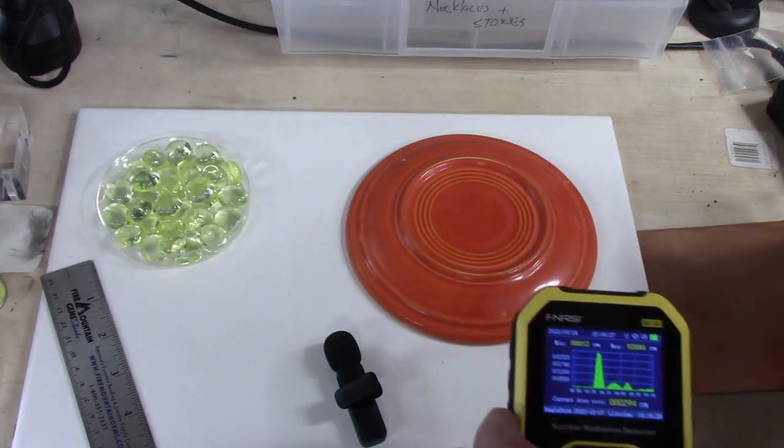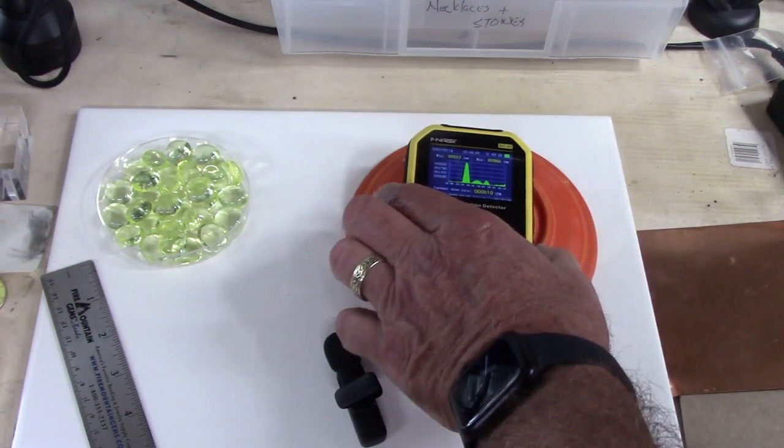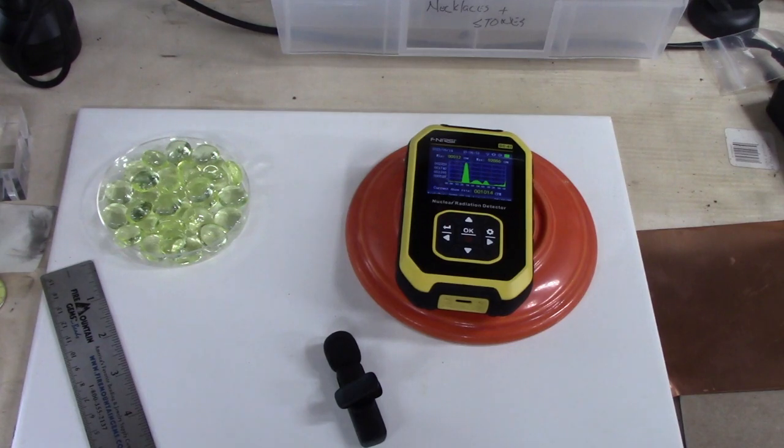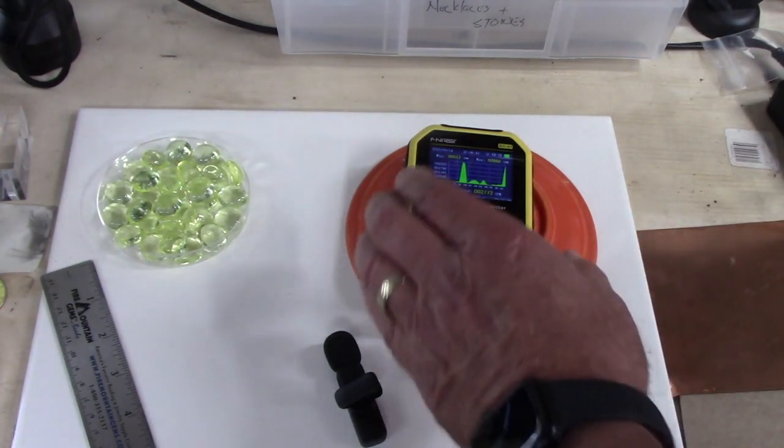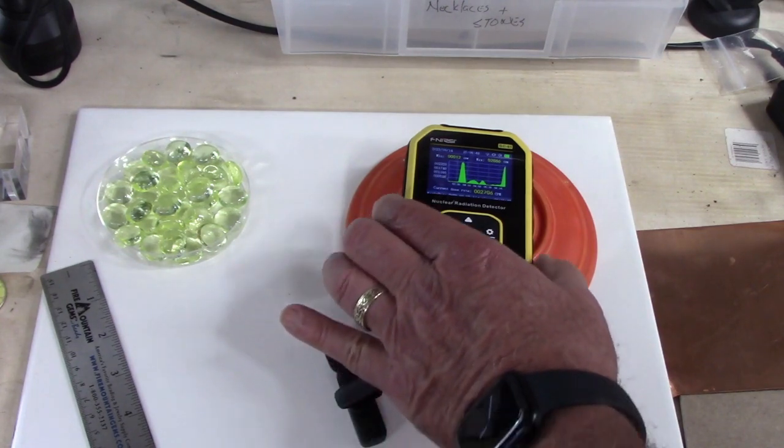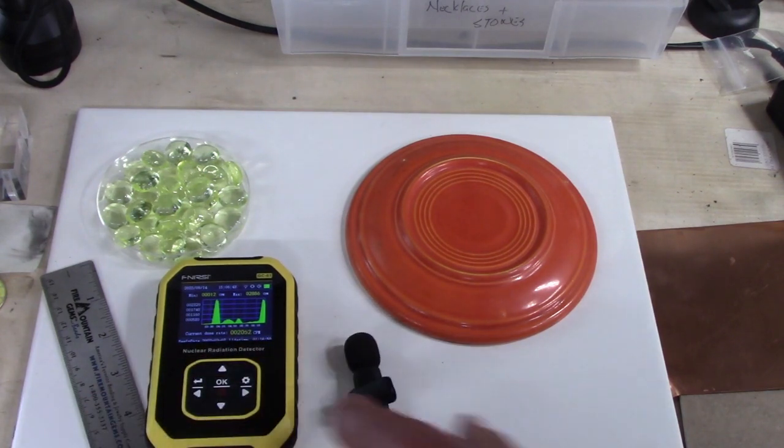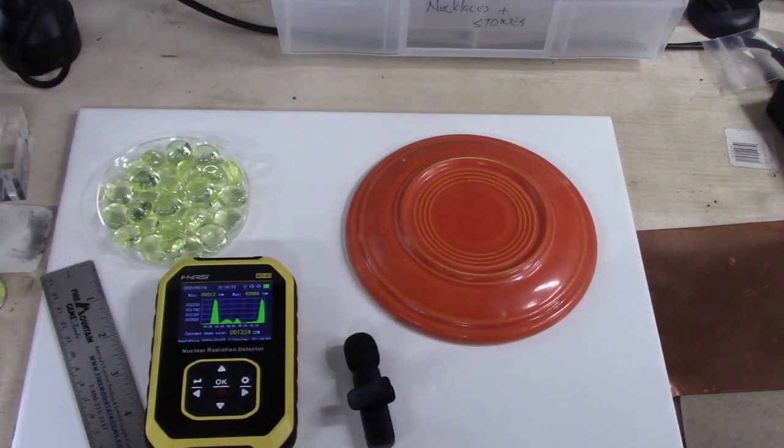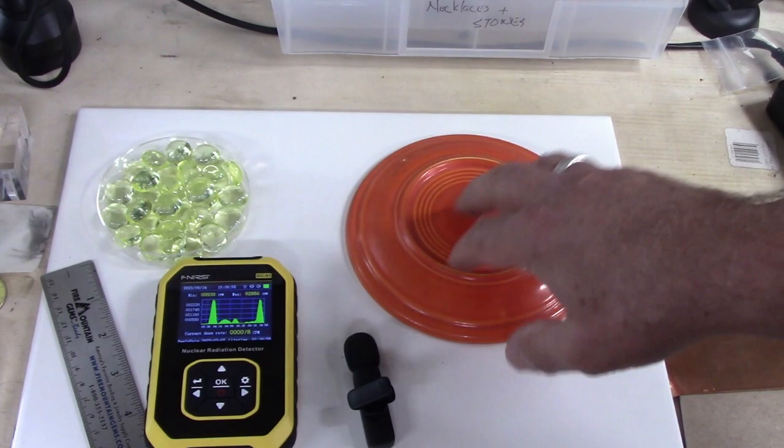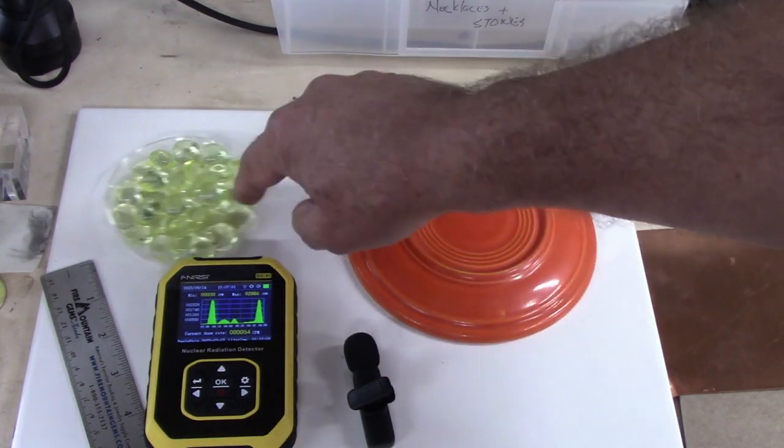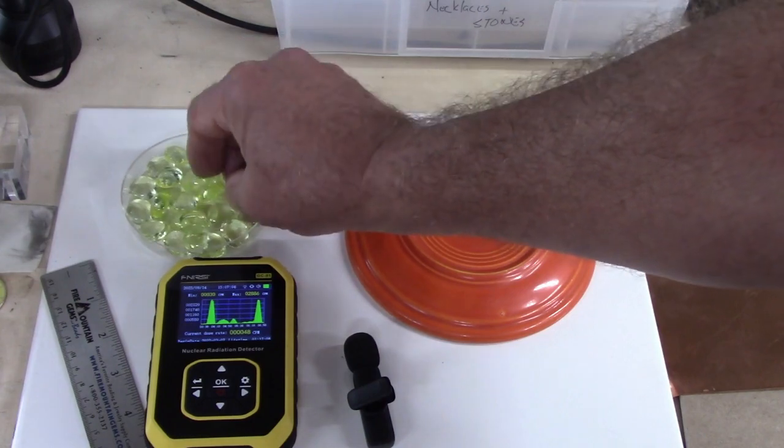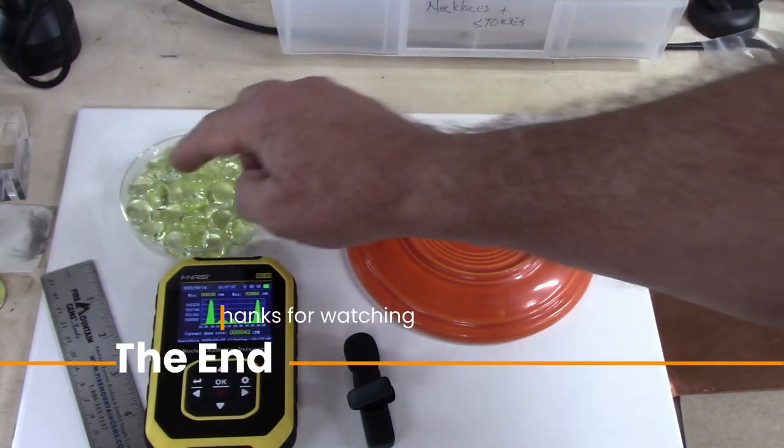So, let's double check and show you what, again, what the total radiation looks like out of one of these plates. Again, consistently it will be about 3,000 counts per minute on this particular detector. I'm going to let it calm down. So, there you have it. Most of the radiation, as expected, is going to be from alpha particles. And, again, compared to the uranium glass, yeah, the uranium glass is essentially just barely above background.